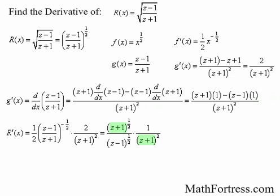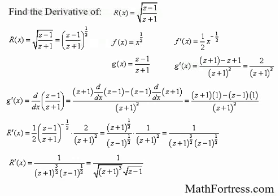We have a quantity with the same base, so using the rules of exponents, we can subtract the exponents, which leads to the final answer of 1 over the quantity z plus 1 raised to the power of 3 halves times the quantity z minus 1 raised to the 1 half. Alternatively, we could rewrite the expression using radical signs — either answer is acceptable.